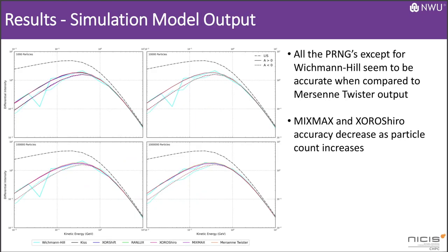Looking at the model outputs, all of the algorithms save for Wichmann-Hill seem to be accurate in comparison to the Mersenne Twister output. But note that for higher particle counts, MixMax and Xoshiro seem to slightly diverge near the peak of the curve. This was confirmed by calculating the percentage deviation of the outputs relative to data from Mersenne Twister.